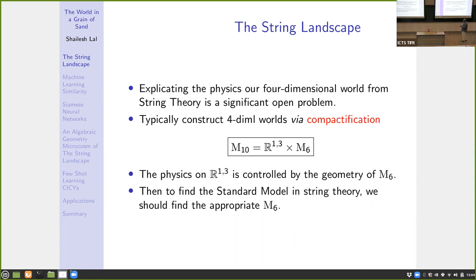The typical paradigm, since string theory is defined in ten dimensions, is to do something called a compactification, where you assume the remaining six dimensions are tiny and rolled up. The physics in the four-dimensional approximate picture is essentially controlled by the topology and geometry of the manifold you're compactifying on. That's why algebraic geometry gives us such a nice microcosm of the string landscape.